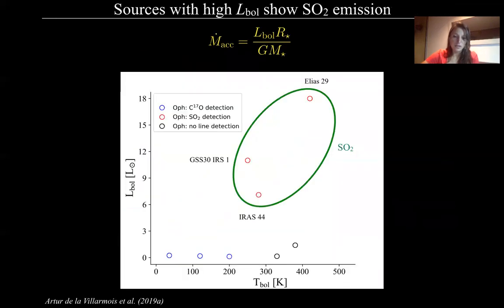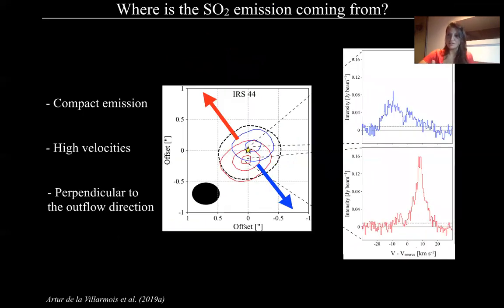And also the sources related with the higher mass accretion rate are also the ones that we see emission of SO2. And the SO2 emission was a surprise for us because it was unexpected. We see a very compact emission that is consistent with the continuum emission here in black contours. It is also related with the high velocities from minus 10 to 10 kilometers per second, and the emission is also perpendicular to the outflow direction.